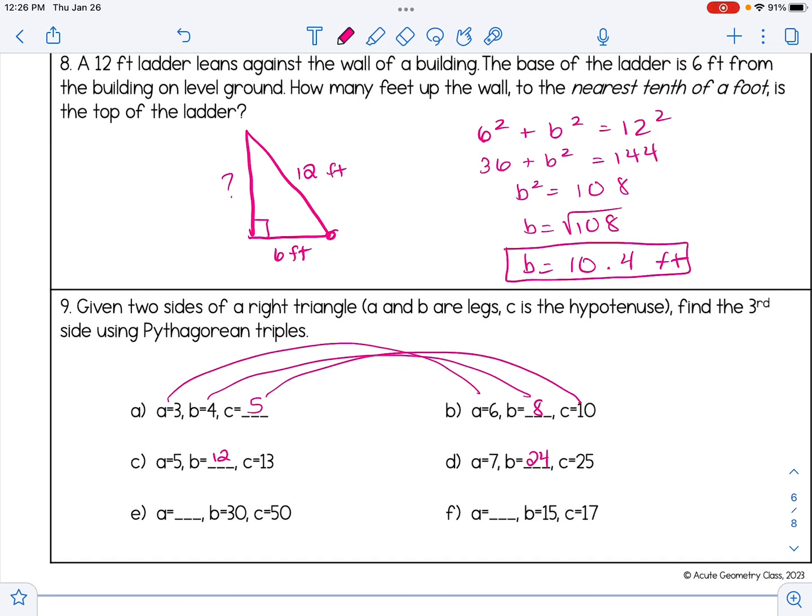In E, I see 30 and 50. And if you remember the example earlier in the video, we talked about the 3, 4, 5 triple, how it could be multiplied by 10 and be 30, 40, and 50. So I know here that A would be 40. It does not matter if they are listed in order from least to greatest or if they're in some random order. We just want to make sure A and B are the legs. And finally, for F, 15 and 17, the missing leg would be 8.